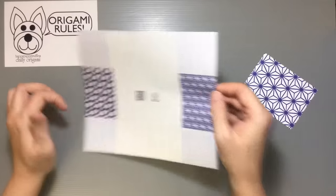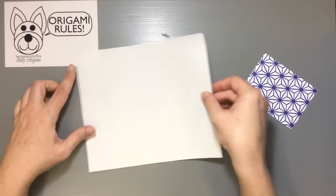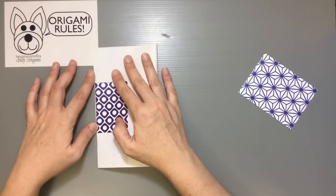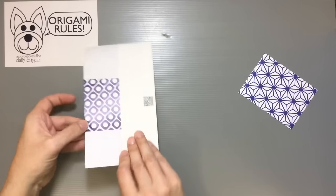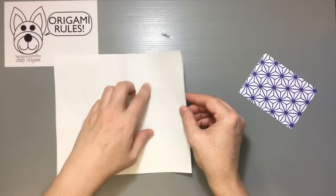What we want to do is start off with the color side facing down, fold your paper in half, open it up, and then we're going to do a door base by folding both of the outer edges towards the center.